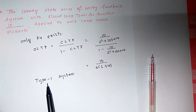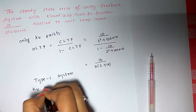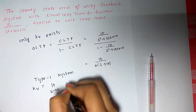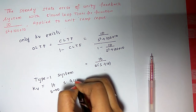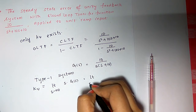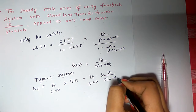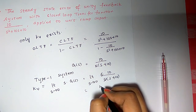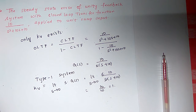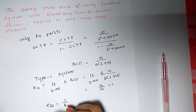For a type 1 system, KV exists and KV equals the limit as s tends to 0 of s times G(s). Substituting the open loop transfer function: limit as s tends to 0 of s times 10 divided by s(s+10), which gives 10/10 equals 1. So the steady state error ESS equals 1 divided by KV, which equals 1.